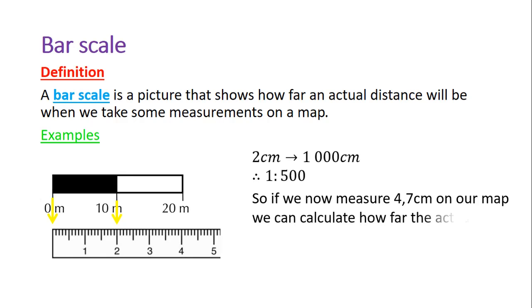If we now measure 4.7 centimeters on our map, we can calculate how far the actual distance on the ground is. We have 1 to 500. We've got our map distance and we want to go to the actual distance, so we've gone from left to right, which means we multiply. That means 4.7 times 500. When we type that in our calculator we get 2350 centimeters. You can change that to meters or kilometers according to the question, and there we have our bar scale.